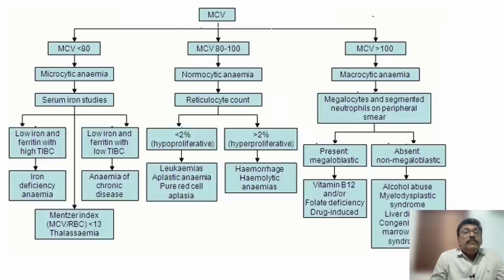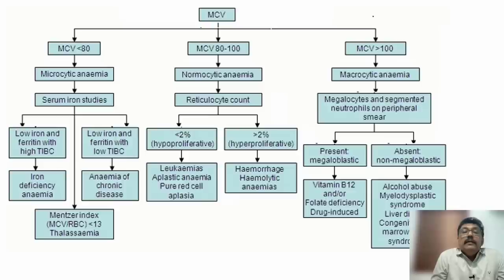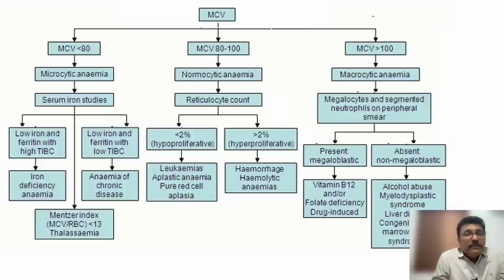Serum ferritin is a better index for iron deficiency than serum iron. Low iron, low ferritin, and high TIBC indicates iron deficiency anemia; low iron and low ferritin with low TIBC indicates anemia of chronic illness. If MCV is greater than 100, it is mostly B12 deficiency — check peripheral smear and B12/folic acid levels. Many vegetarian patients are B12 deficient and may also present with peripheral neuropathy, dementia, visual defects, or subacute combined degeneration of the cord.